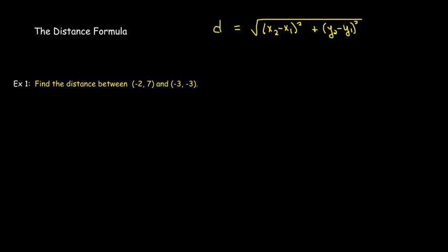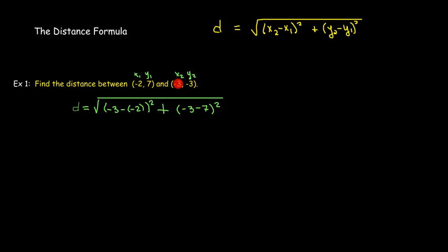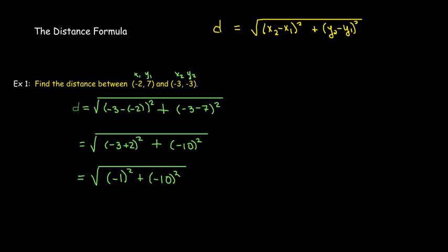Let's do an example. We have two points: (-2, 7) and (-3, 3). We'd like to find the distance between them. Start by labeling x₁, y₁, x₂, y₂ and substitute into the formula. We get the square root of (-3 minus -2) squared plus (3 minus 7) squared. That's (-1) squared plus (-10) squared, which is 1 plus 100, giving us the square root of 101.